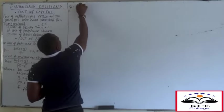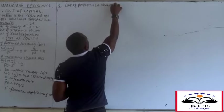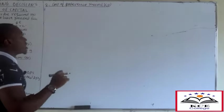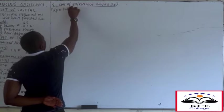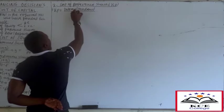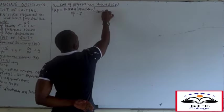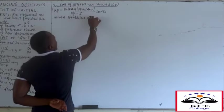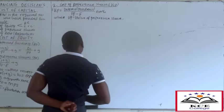The second element is the cost of preference shares, denoted by KP - the required rate of return by the preference shareholders. To get the cost of preference share: KP = Dividend / (VP - F) × 100%, where VP is the current market value of the preference share and F is the flotation cost.